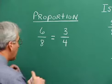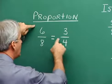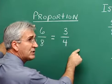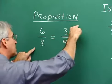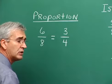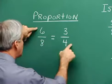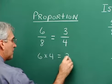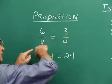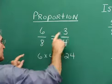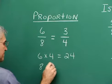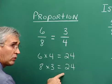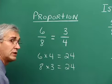By cross multiplication, I mean to multiply the numbers that lie along diagonals. Six times four — that's a cross multiplication. Eight times three is a cross multiplication. Six times four is 24, and then along the other diagonal, eight times three is also 24. So because these are equal to one another, we know that the proportion is valid.